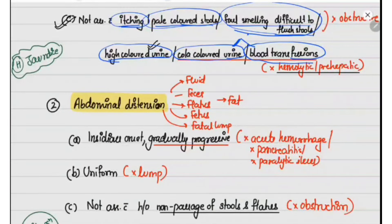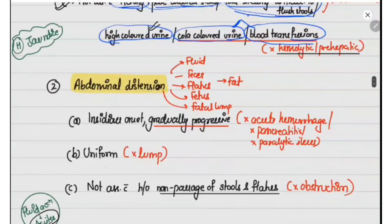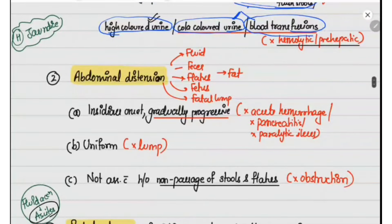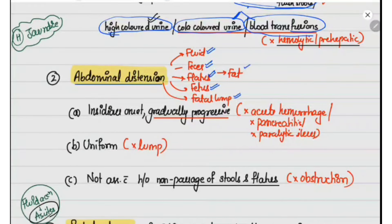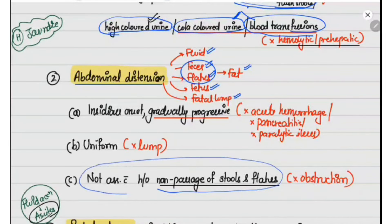The patient has abdominal distension since eight months. It was insidious in onset and has been gradually progressive since then. The distension is uniform and there is no history of non-passage of stools and flatus. Whenever a patient presents with abdominal distension, it can be due to six F's: fluid accumulation, feces, flatus, fetus, a fatal lump, or fat. In the case of feces and flatus, there will be history of non-passage of stools and flatus, which is absent in this case.